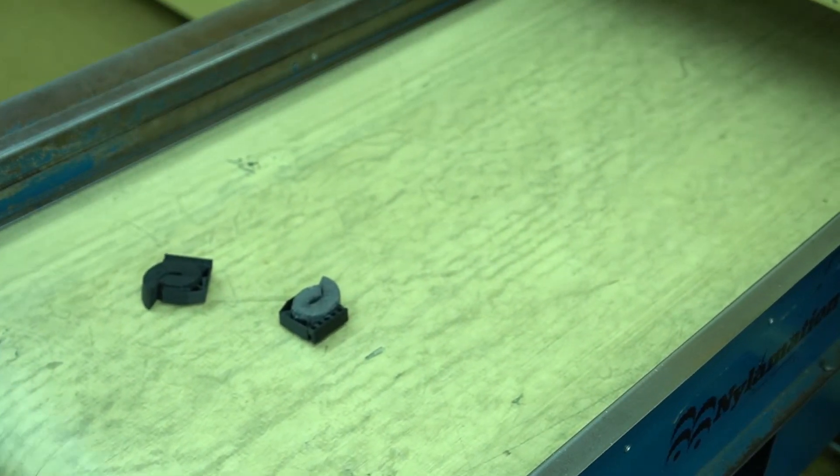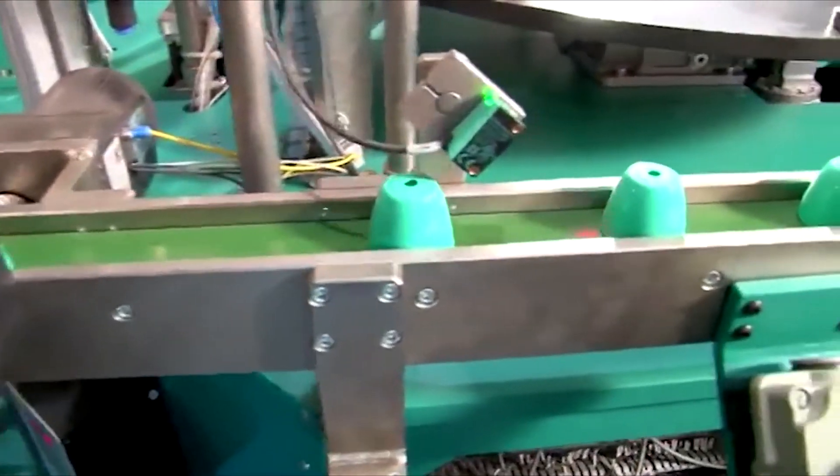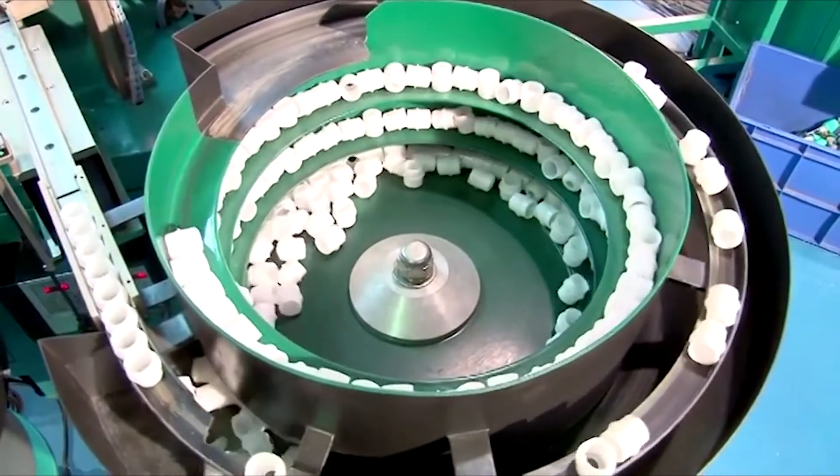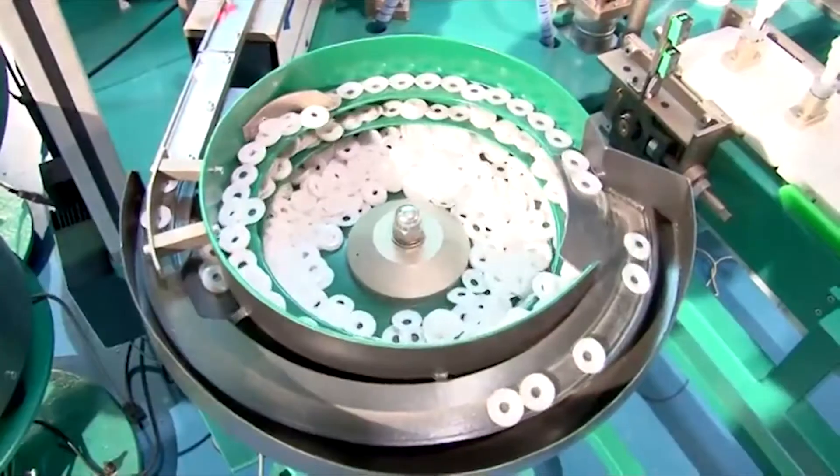Parts will fall on a conveyor belt, bringing them to the automatic assembly machine. Each piece will fall into a hopper that catches them and loads them onto a guided track with proper orientation.